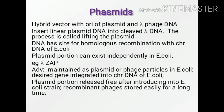An example for phasmid is lambda sac. Advantages of phasmids: it is maintained as plasmid or phage particles in E. coli. The desired gene is integrated into the chromosomal DNA of E. coli. The plasmid portion can be released free after introducing into E. coli strain, and the recombinant phages can be stored easily for a long time.